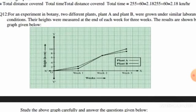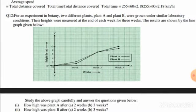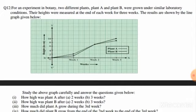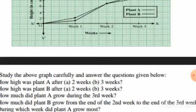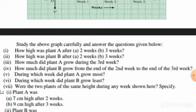In question number 12, for an experiment in botany, two different plants — plant A and plant B — were grown under similar laboratory conditions. Their heights were measured at the end of each week for three weeks. The results are shown by the line graph. In this graph, plant A and plant B growth is shown over week one, week two, and week three.